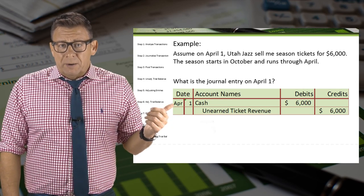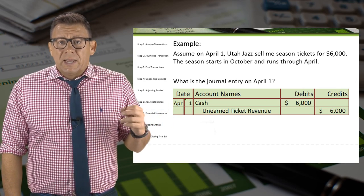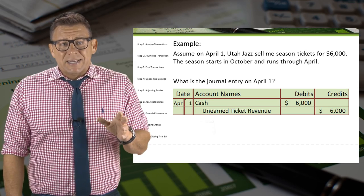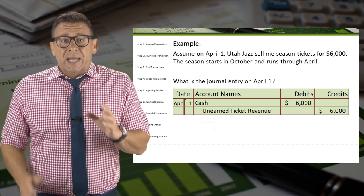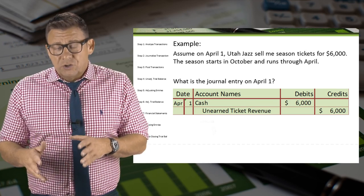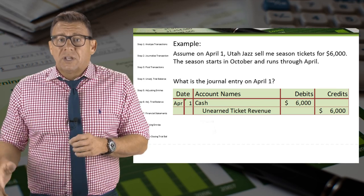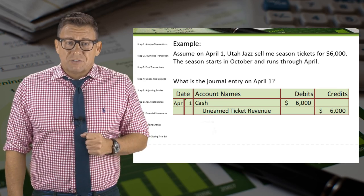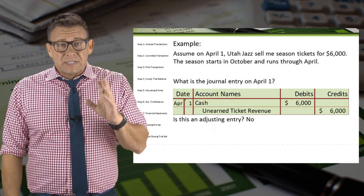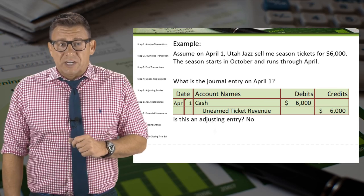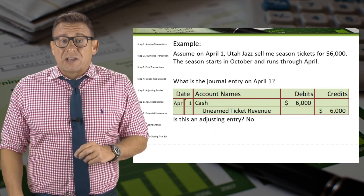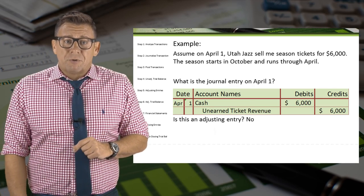The journal entry on April 1 is a debit to the asset account cash and a credit to the liability account unearned ticket revenue for $6,000. This is not an adjusting entry because there is an underlying transaction that happened on April 1.